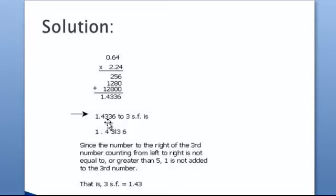Look at the number to the right of the third number. The number is 3. If this were greater than or equal to 5, we'd add 1 to the third number, but in this case it isn't.